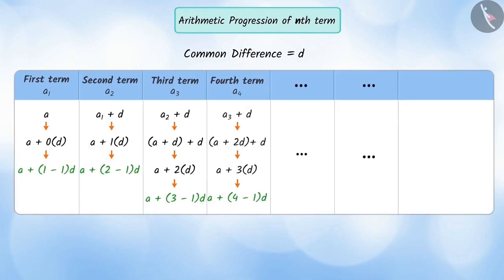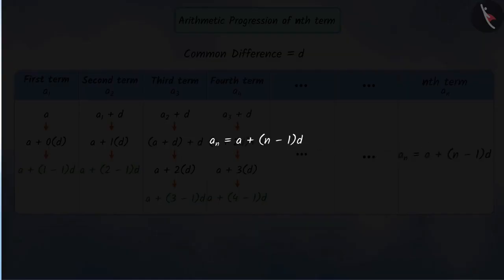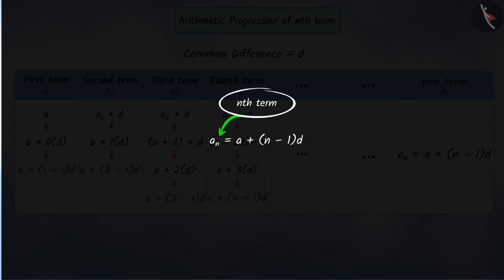Proceeding in the same order, we can express the nth term of an AP as a plus (n minus 1) multiplied by D, where a is the first term and D is the common difference. This nth term is called the general term of an arithmetic progression.